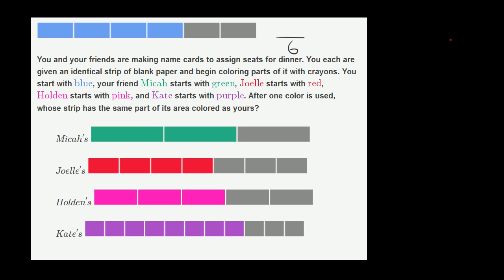And how many of them have been colored blue? Well, let's see, one, two, three, four of my equal sections have been colored blue. So I need to figure out which of these other folks have colored exactly four-sixths of their strip. And another way of thinking about it, I want to say whoever has an equivalent fraction colored, not blue, but colored whatever their color might be.